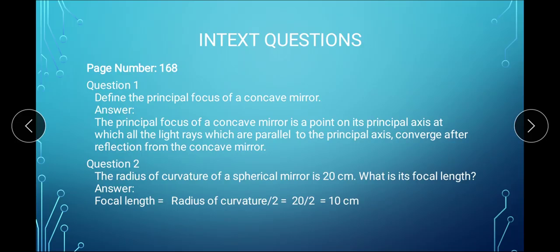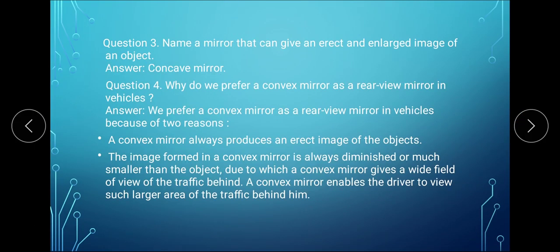Question number 2 says the radius of curvature of a spherical mirror is 20 cm. What is its focal length? As we have learnt that focal length is half of radius of curvature, therefore the focal length will be half of 20, that is 10 cm.